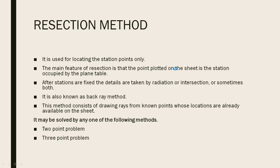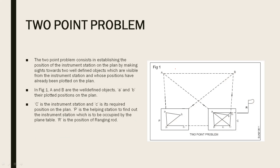For example, what is the 2-point problem and 3-point problem? There is a 2-point problem. Let's see here — there is a plane table. We have to know this point; we don't know this point. So we will use the plane table to locate this point.